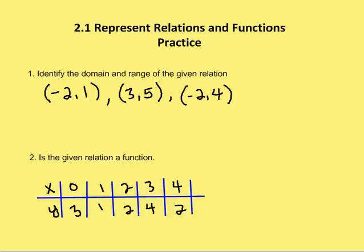All right, so the first question asks us to identify the domain and the range of the given relation. So if we recall from the previous lesson, the domain is all the inputs and the range all of the outputs.